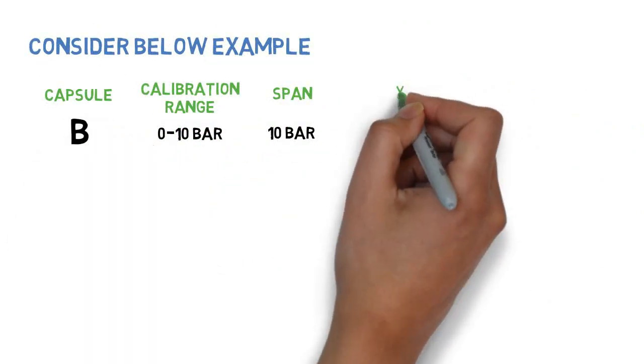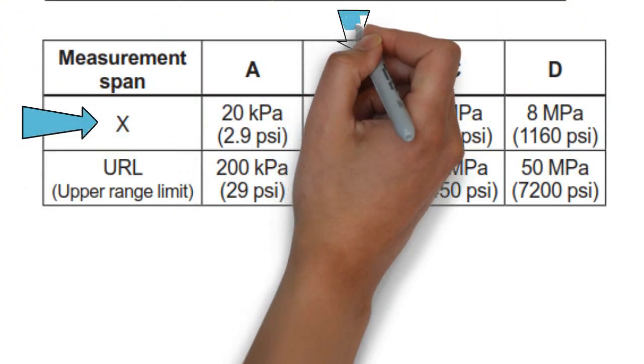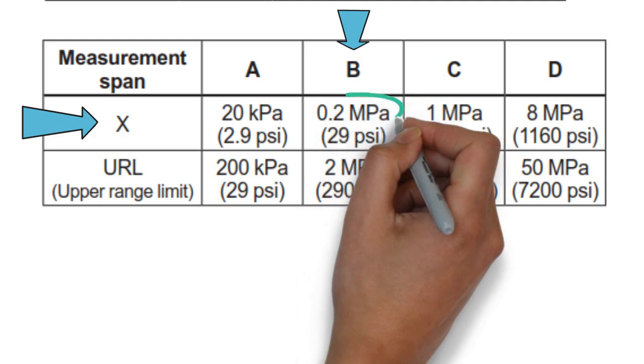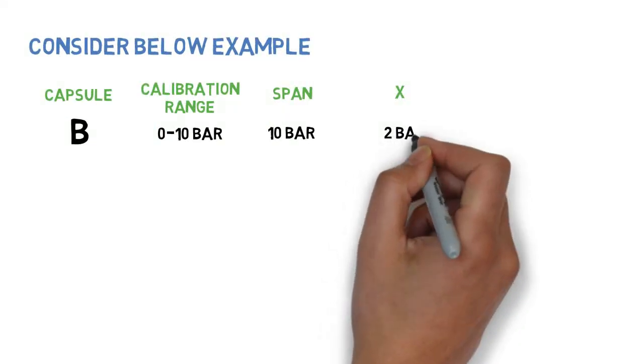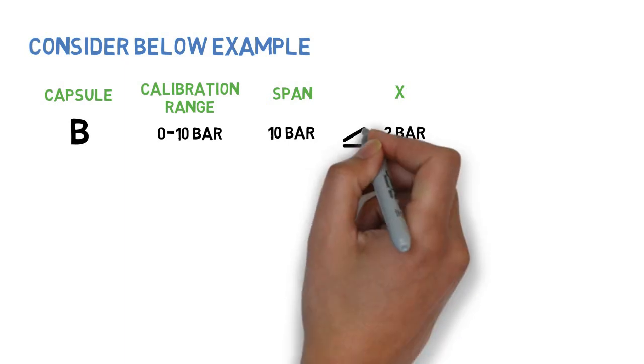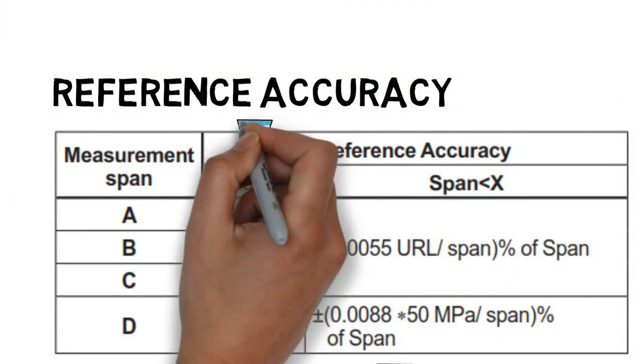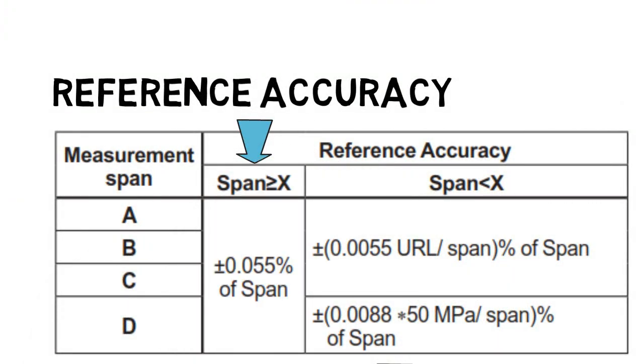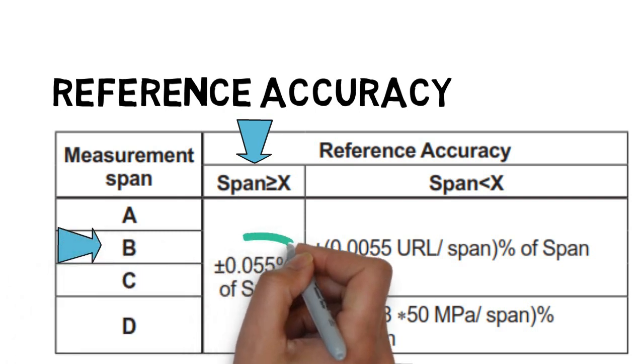X: Value of X for capsule B is 0.2 MPa or 2 bar. Span 10 bar is greater than X 2 bar. When span is greater than X, accuracy for capsule B shall be 0.055% of span.